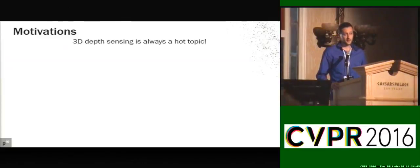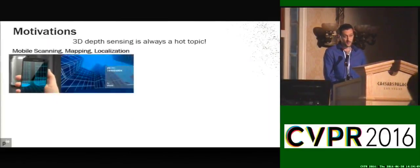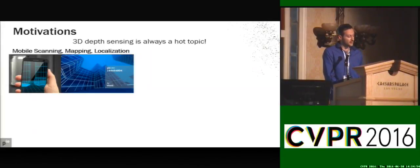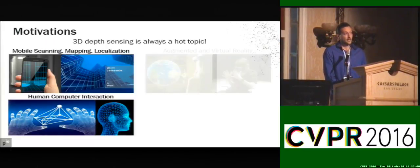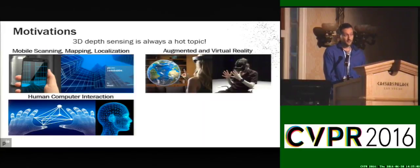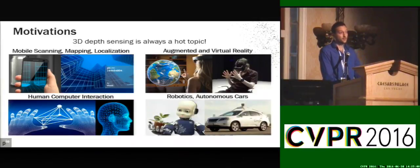I'm pretty sure everyone in this room knows that 3D sensors are becoming ubiquitous. Soon we will have them in our mobile phones where we can scan objects and environments. Laptops already make use of them and they're enabling new interaction technologies. Augmented reality and virtual reality require contents generated in full 3D. Complex systems such as robots and autonomous cars need to map their surroundings in order to accomplish their tasks.